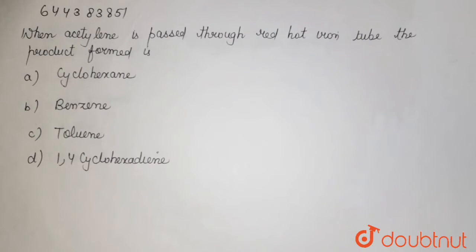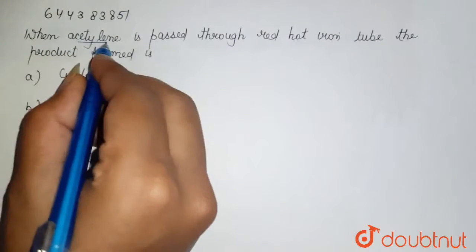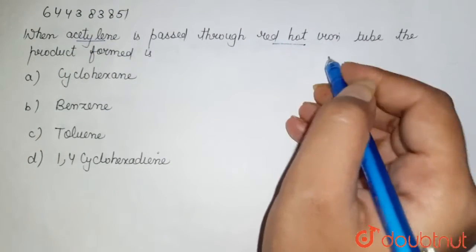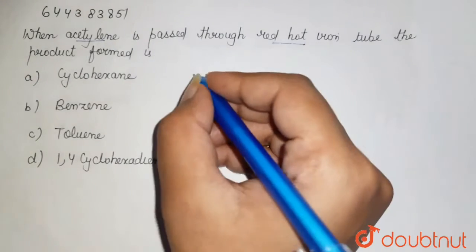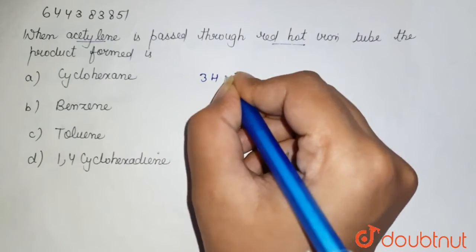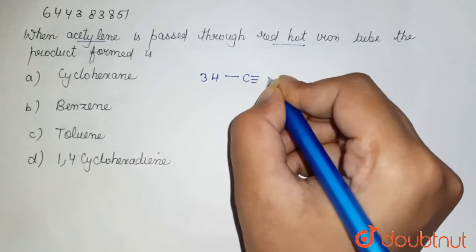So we have to see the reaction between acetylene and the red hot iron in the tube. See the acetylene structure - it is H-C triple bond C-H.